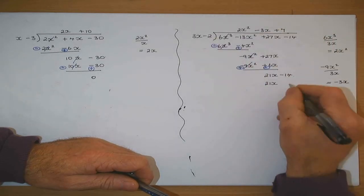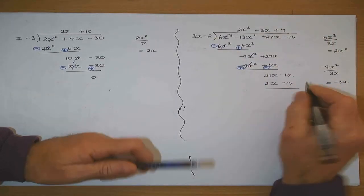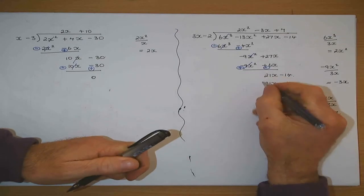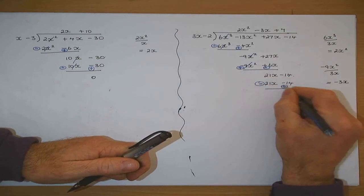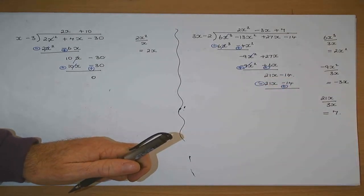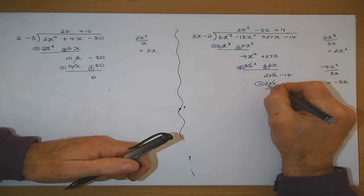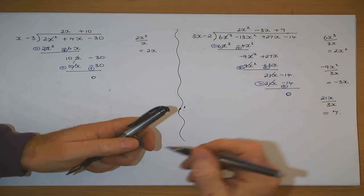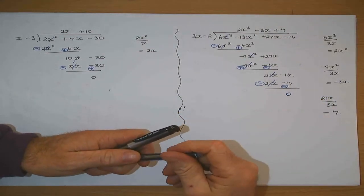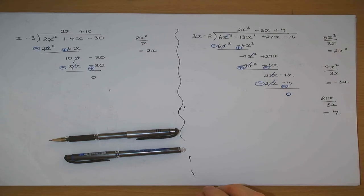7 by 3x, and 7 by minus 2. Change the sign on the lower line and add — that becomes a minus, that becomes a plus. They cancel. Minus 14 plus 14 equals 0. So it divides in evenly. What does that mean then?